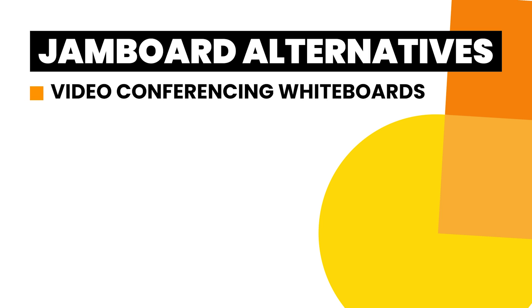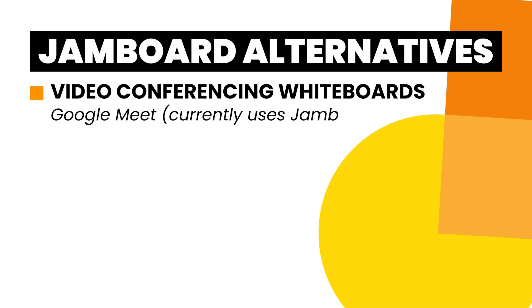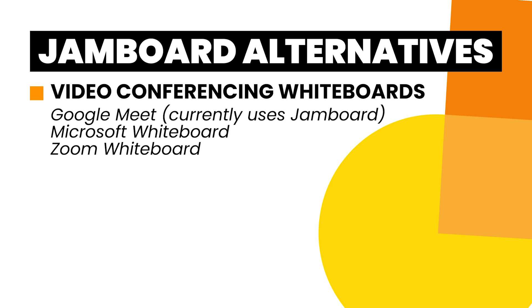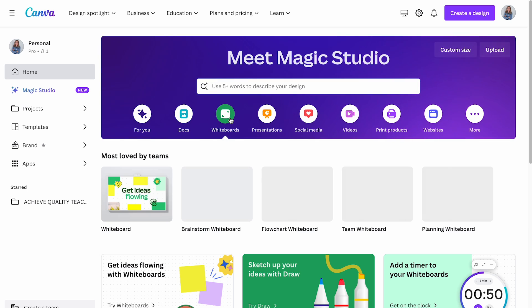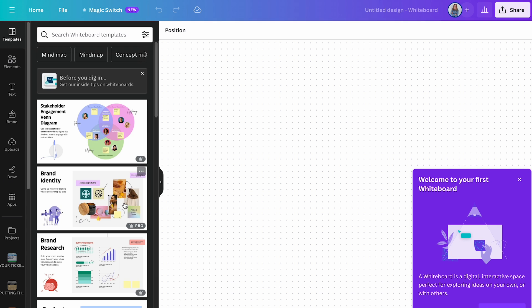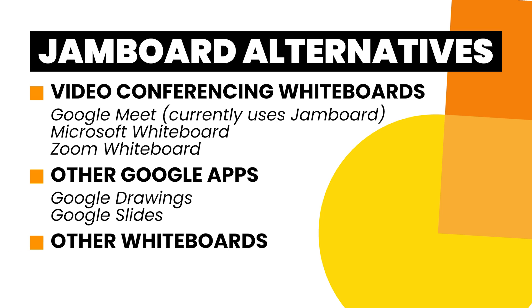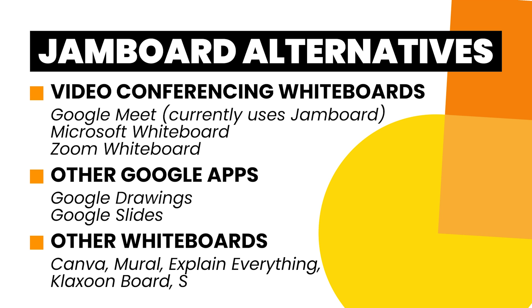I wanted to start with those alternatives since they should have the Jamboard importer available, but here are a couple of other options to try as well. A lot of video conferencing software programs have built-in whiteboards, such as Google Meet, Microsoft Whiteboard, and even Zoom Whiteboard. You can also use tools you probably already know — for example, Google Drawings or Google Slides can be shared with students with editing capabilities and used as a virtual whiteboard. Canva also has a virtual whiteboard option. Other services include Mural, Explain Everything, Klaxoon Board, and Sketchboard.